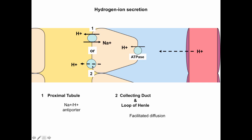Hydrogen ion secretion happens through two possible mechanisms that differ in the last step of secretion. The upper diagram illustrates the last step in the proximal tubule, and the lower diagram shows the last step in the collecting duct and loop of Henle. Hydrogen ions — acid starting in the blood — cross the basolateral membrane through a proton pump, essentially a hydrogen ATPase pump, using energy in the form of ATP.